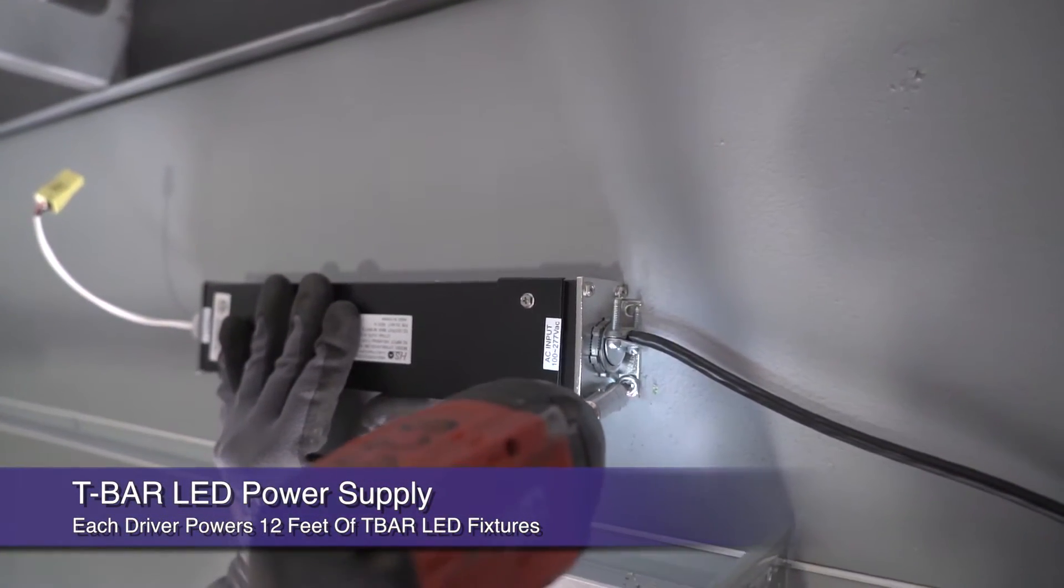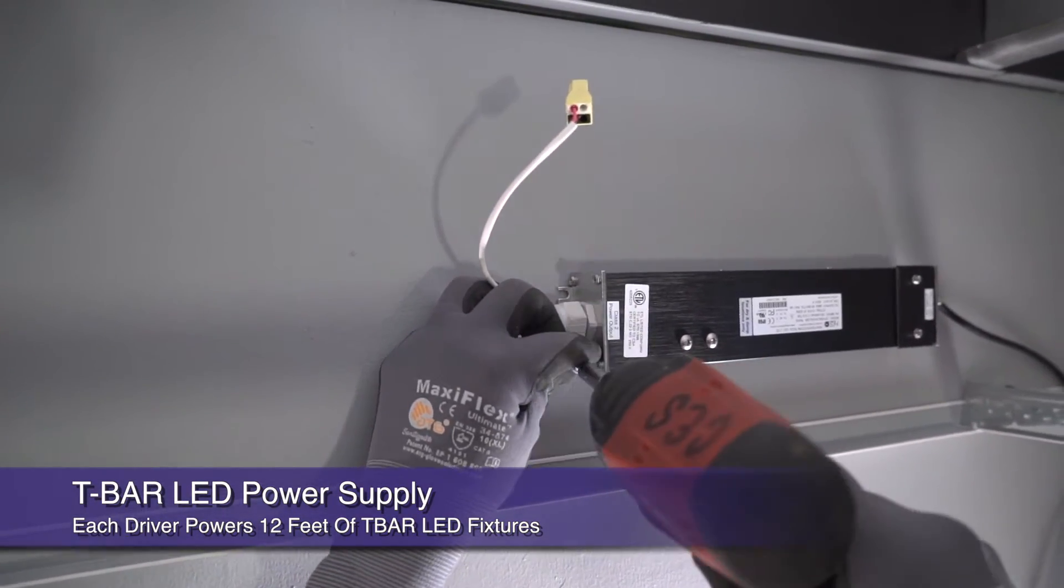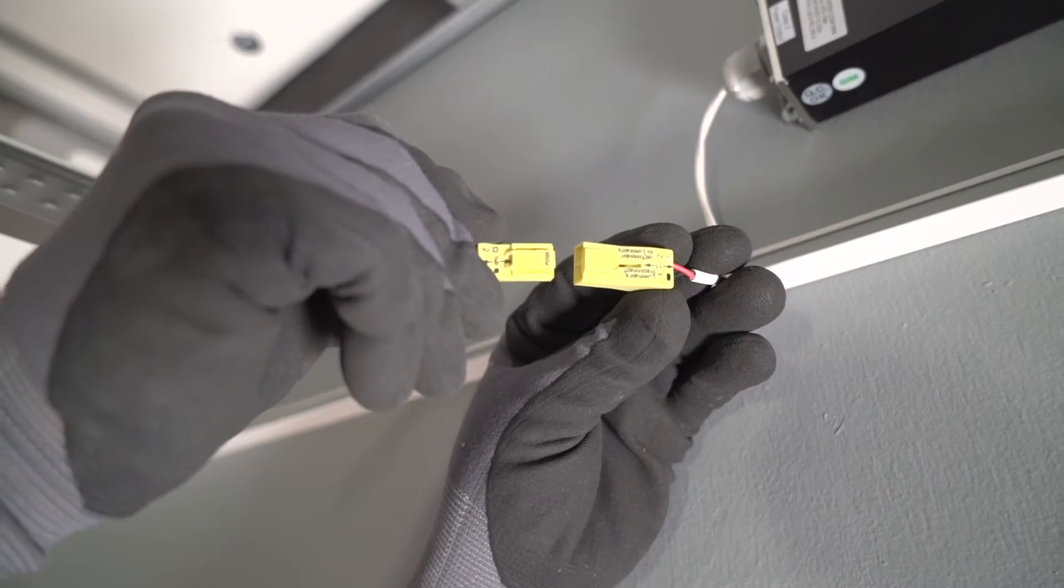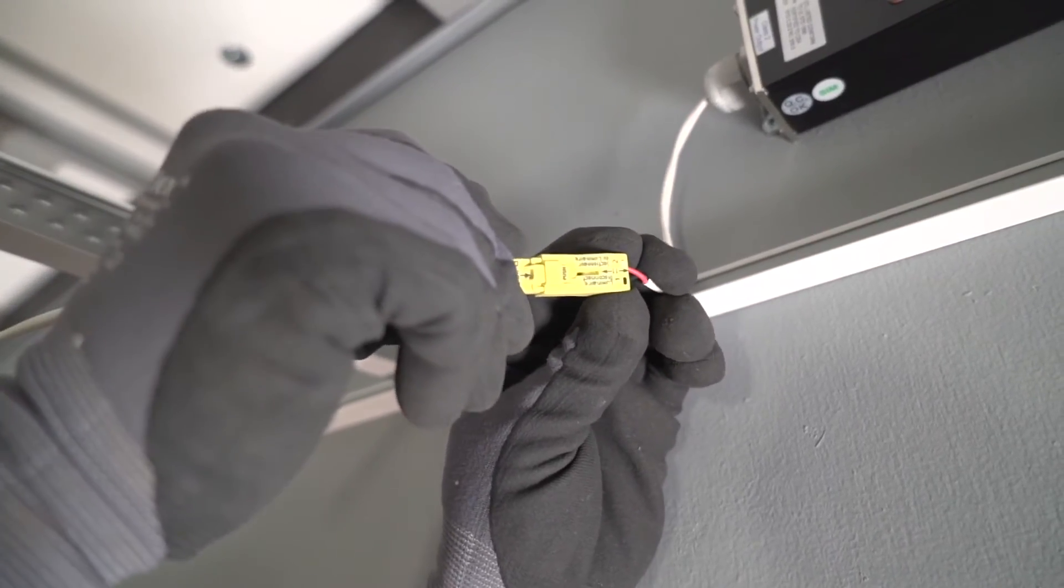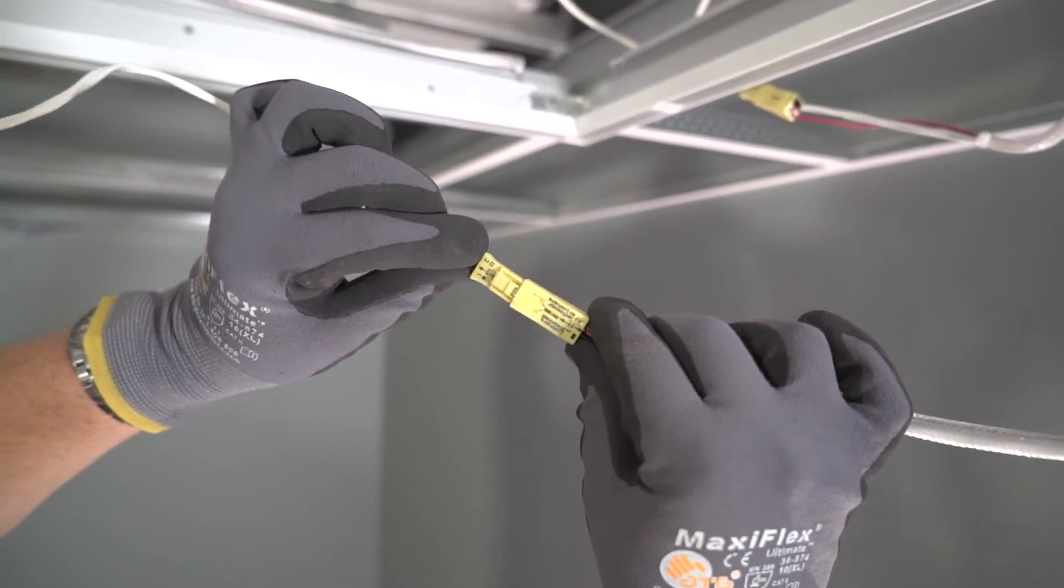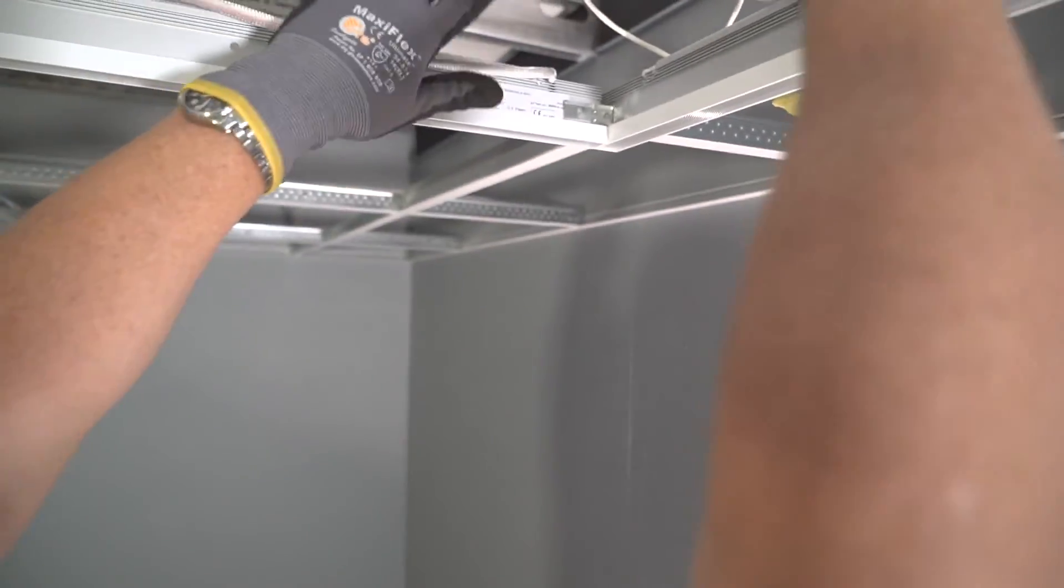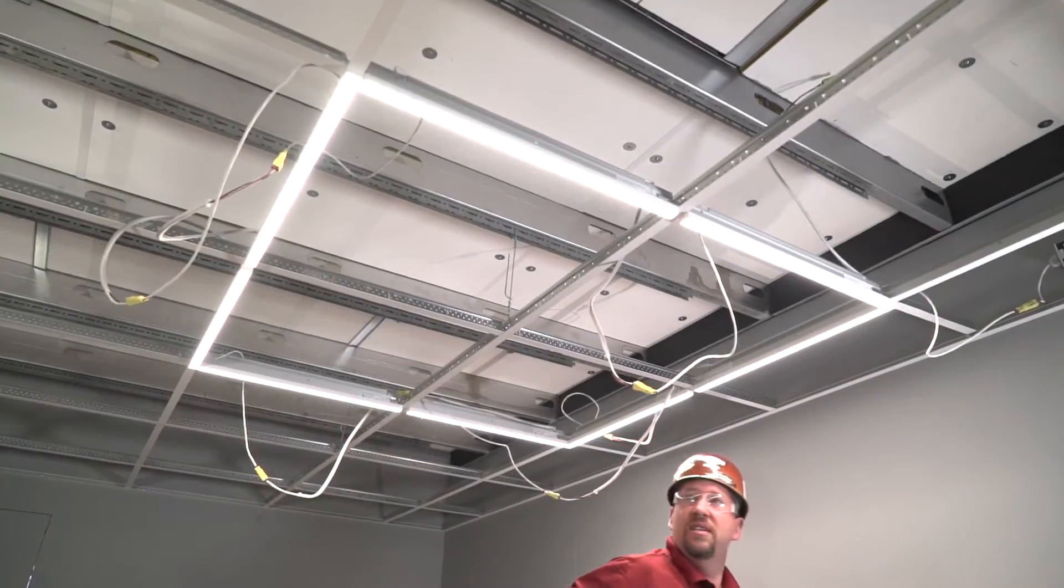Mount your first T-Bar LED power supply in close proximity to the first LED T. These drivers convert AC current to the 24-volt DC current these LED T's run off of. Each driver can power up to 12 linear feet of T-Bar light. Included quick-click connectors make it easy for the electrician to daisy-chain the cables back to the power supply.